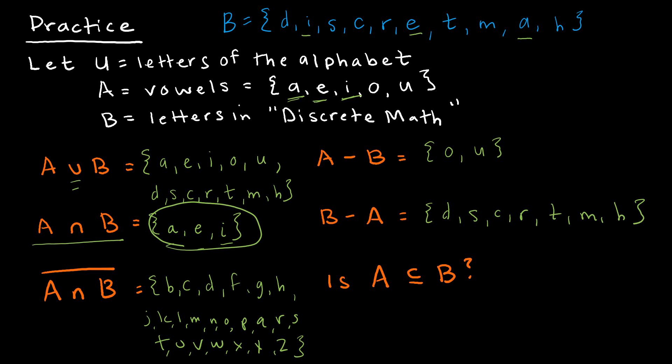And last question, is A a subset of B? That is to say, do all of these values belong in B? And it doesn't matter if B has extras, but this is obviously, or hopefully obviously, no. Because we already determined previously that O and U are not contained in discrete math. So therefore, no, A is not a subset of B.